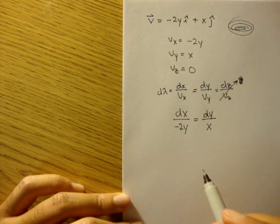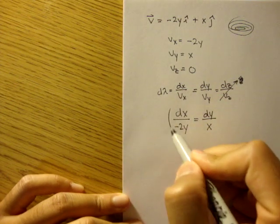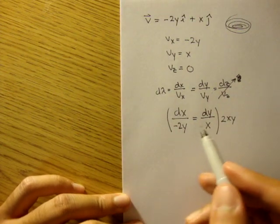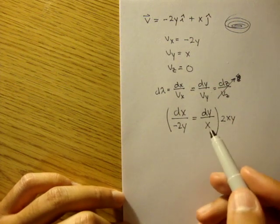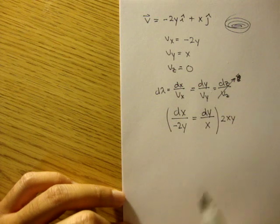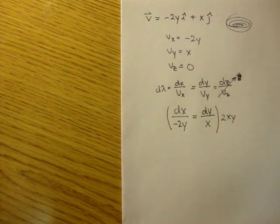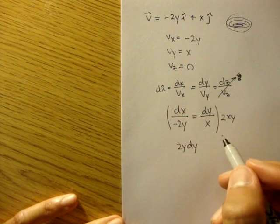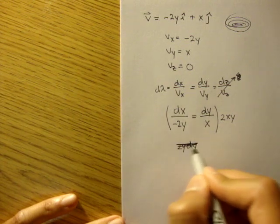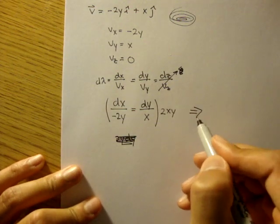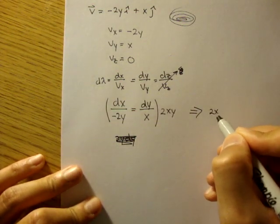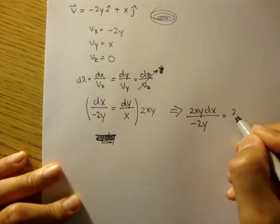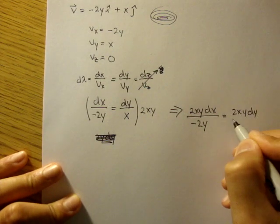All right, so what I want to do is I want to multiply everything by 2xy, just so things cancel out and all the variables match their differentials. So we want the x over here, and we want the y's over here. Let's solve it out.